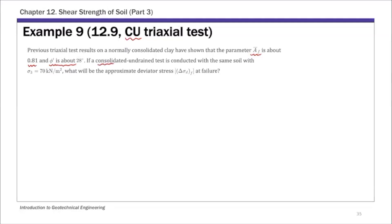The confining pressure for the CU triaxial test is 70 kPa, and we are going to calculate the deviator stress delta sigma d at failure. From what's given, this is a normally consolidated clay specimen, so we know that the C prime parameter is approximately zero.